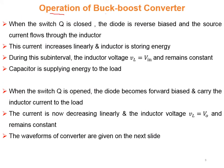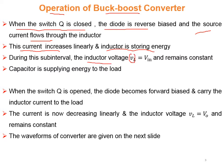The operation of the buck-boost converter can be explained in two sub-intervals. The first sub-interval starts when the switch Q is closed. The diode becomes reverse biased and the source current flows through the inductor. This current increases linearly and the inductor is storing energy during this sub-interval. The expression for the inductor voltage VL during this sub-interval is equal to V_in, and this voltage remains constant.